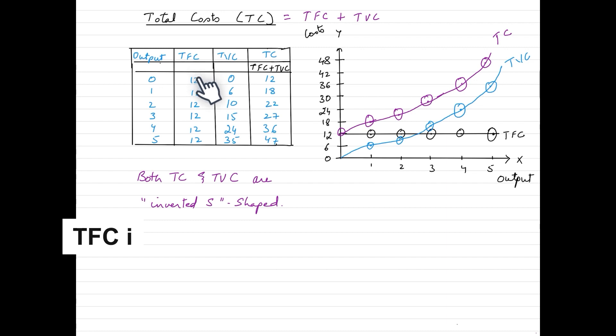We can see that total fixed cost is same throughout each level of output. So we get a curve which is parallel to x-axis because at every level of output, the cost is the same, which is 12. In this case, whether it is 0 units, it is 12. Whether it is 2 units, it is 12. Whether it is 4 units, it is still 12. And joining all these pointers, we get the total fixed cost curve which is a parallel line to x-axis.